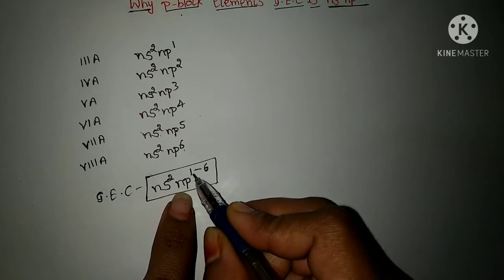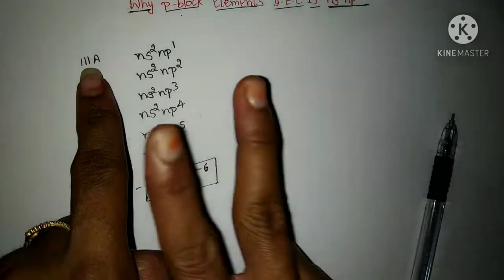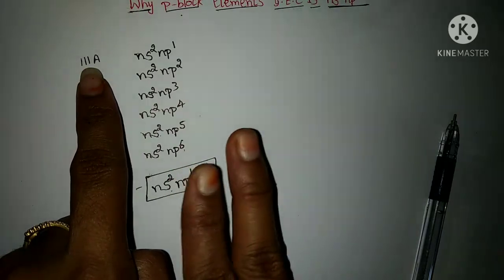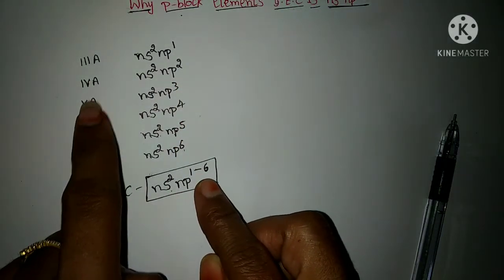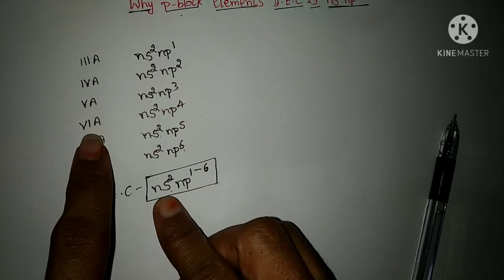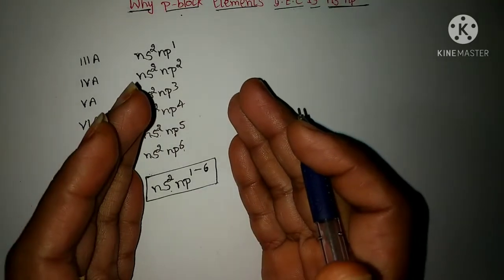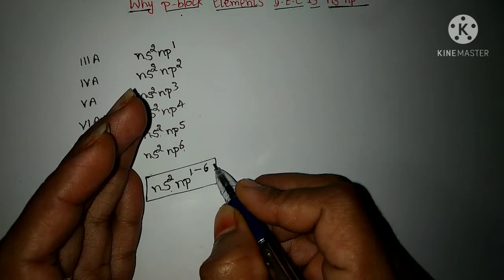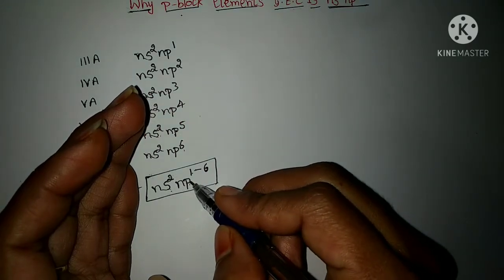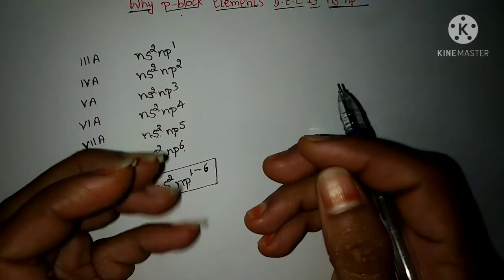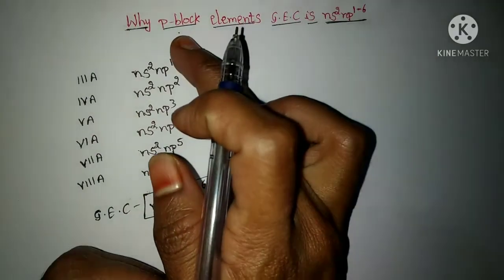If NS2 NP1 is there, that is the 3A group elements' general electronic configuration. NS2 NP2 — in place of 1 to 6, if 2 is there, that is the electronic configuration of 4A group elements. If NS2 NP3, that is for 5A. NS2 NP4 for 6A. NS2 NP5 for 7A. NS2 NP6 for 8A group elements. So commonly we write 1 to 6 because any number of electrons from 1 to 6 may be present. This general electronic configuration is suitable for all elements present in the P block.